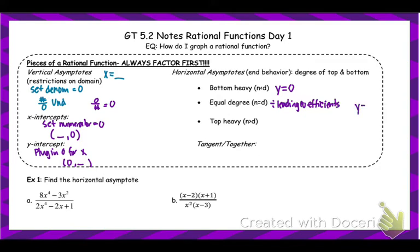If the degrees are the same, the horizontal asymptote is y equals one leading coefficient divided by the other. If the graph is top-heavy — a higher degree on top — there is no horizontal asymptote, but you could have a slant asymptote. We'll get into those a little bit later in the notes.